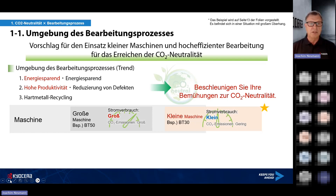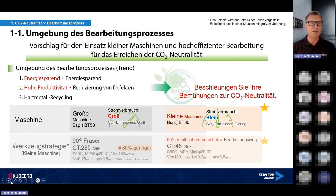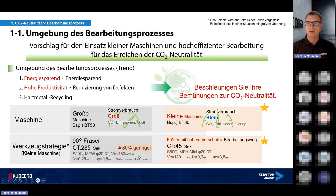Wenn wir uns die Maschinen anschauen, sehen wir: Große Maschinen mit BT50 oder SK50 haben in der Regel einen hohen Stromverbrauch und dementsprechend höhere CO2-Emissionen. Bei kleineren Maschinen – hier als Beispiel BT30-Maschinen – haben wir einen geringen Stromverbrauch und dementsprechend geringere CO2-Emissionen im Vergleich. Das Thema heute sind die Werkzeugstrategien bei kleinen Maschinen: 90-Grad-Fräser beziehungsweise Fräser mit hohen Vorschüben, und wo genau die Einsparungen liegen.